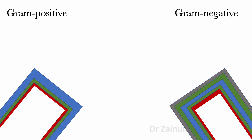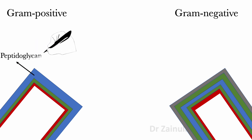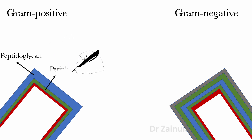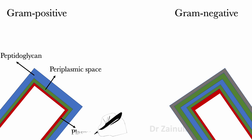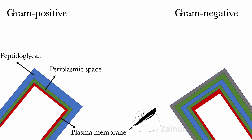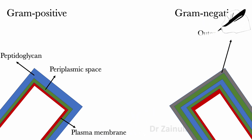Gram-positive and gram-negative bacteria have a difference in the structure of the cell walls. Gram-positive bacteria have a thick peptidoglycan, periplasmic space, and plasma membrane. Gram-negative bacteria have an outer membrane, lipopolysaccharide and proteins.